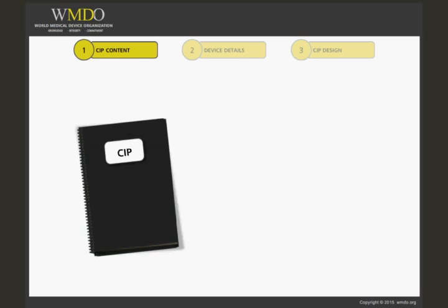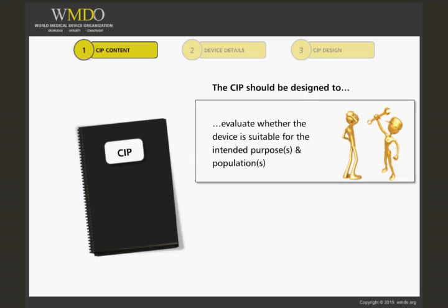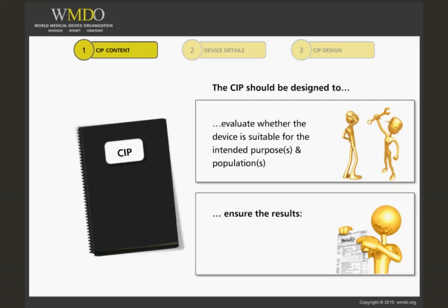Design considerations of the clinical investigation are covered in the course Design of the Clinical Investigation Plan. However, it is worthy to note that the contents of your clinical investigation plan should reflect design considerations, including those that adequately allow the investigational device to be assessed for its suitability for the intended purpose and the patient population. This means ensuring that the reader understands the exact purpose and the exact patient population, and how this matches with the device design. The overall contents of the clinical investigation plan should reflect a design which brings results that have clinical relevance and scientific validity and support the clinical investigation objectives.